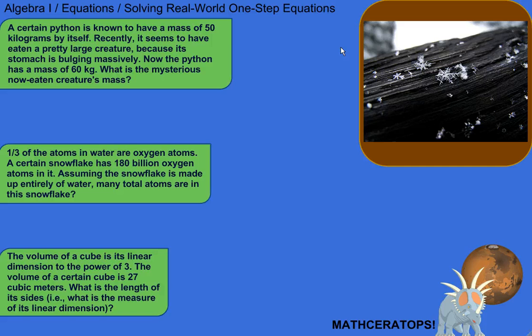A certain python is known to have a mass of 50 kilograms by itself. You know, it's over 100 pounds. Recently, it seems to have eaten a pretty large creature because its stomach is bulging massively. So we've got a python. You've seen pictures of these where it's got this, it's just eaten something. So, it's got this big, yeah, the thing it ate. So, it seems to have eaten something. Okay, so now we weigh it because we're curious. And now, the python seems to have a mass of 60 kilograms. What is the mysterious, now-eaten creature's mass?